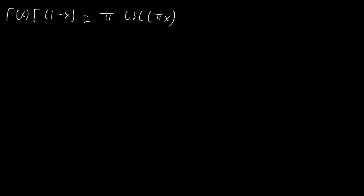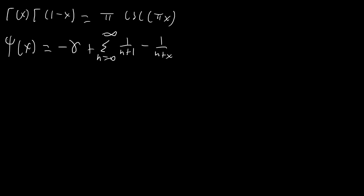Also we're going to be using the fact that the digamma function ψ(x) is equal to −γ (where γ is the Euler–Mascheroni constant) plus a certain sum, and differentiating both sides we'll also get that the first polygamma function ψ₁(x) is just the sum from n = 0 to infinity of 1 over (n + x)².